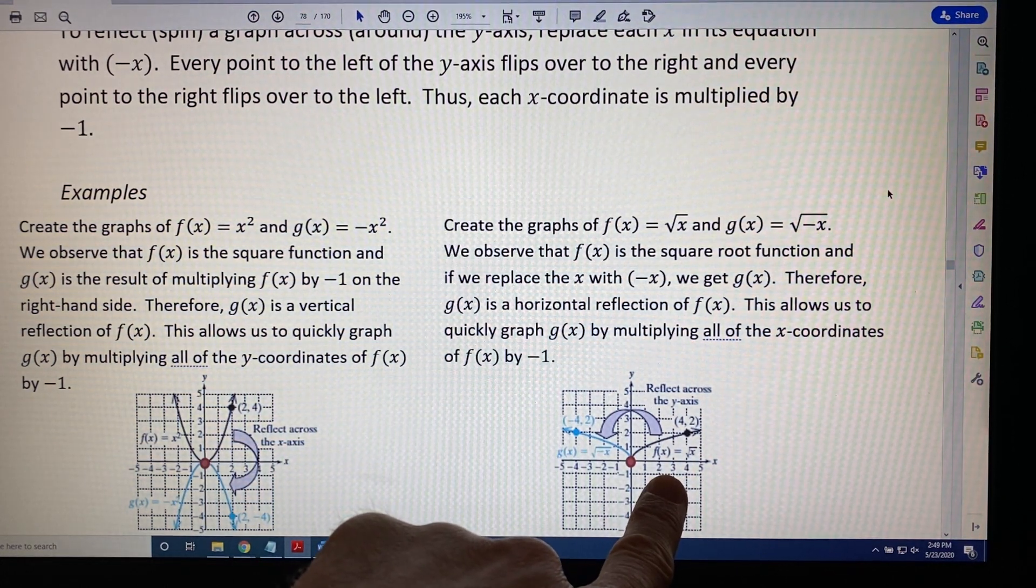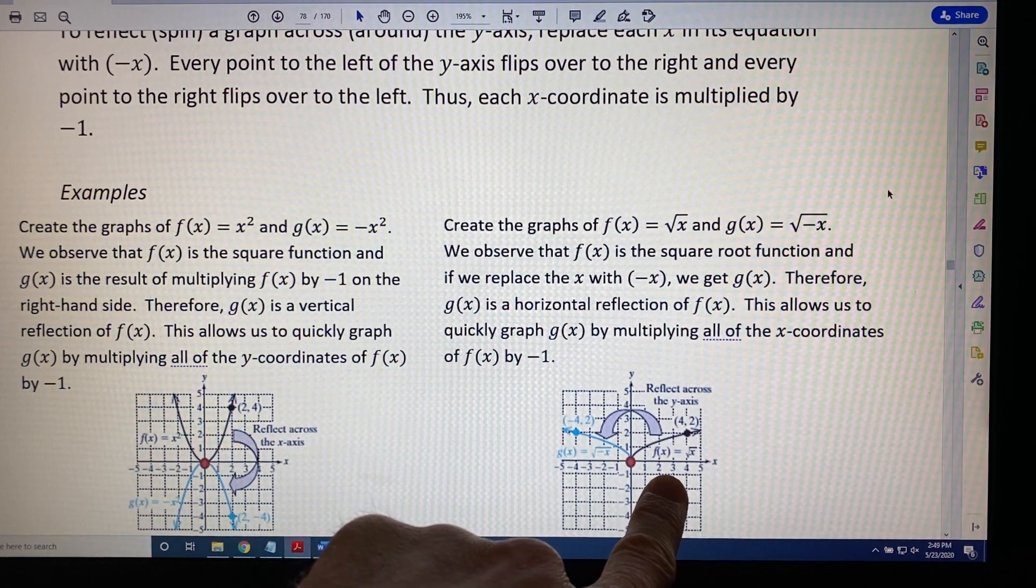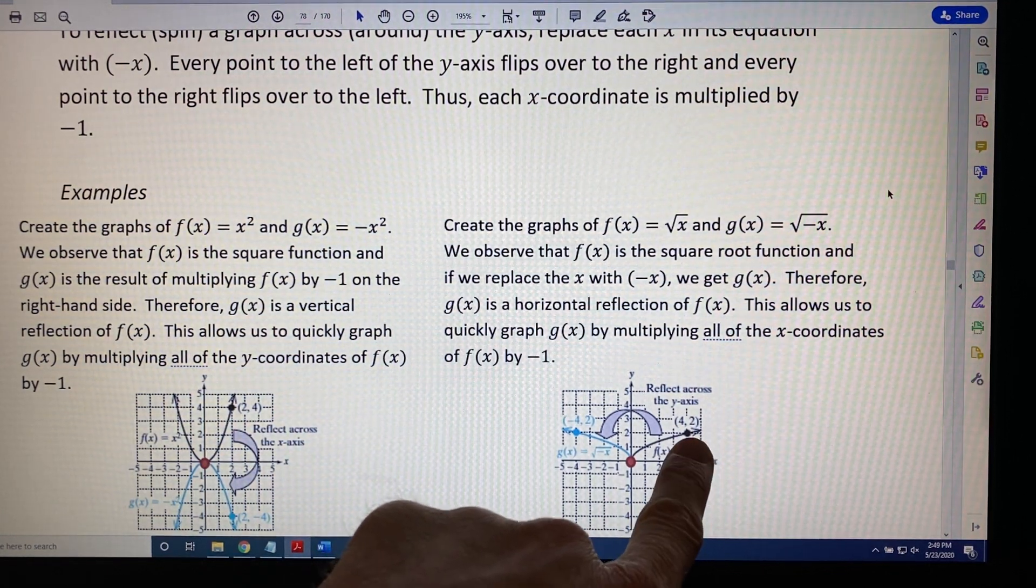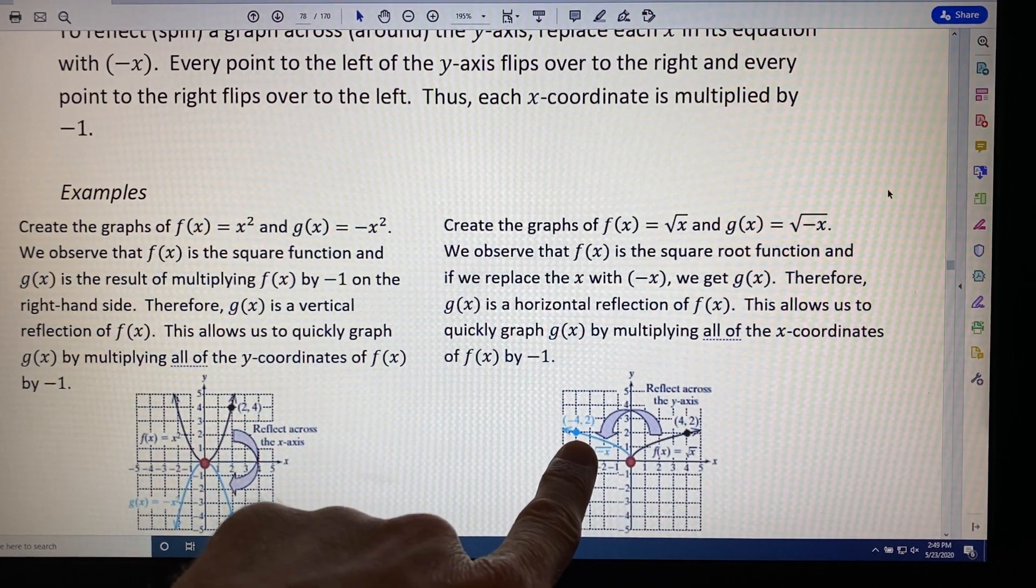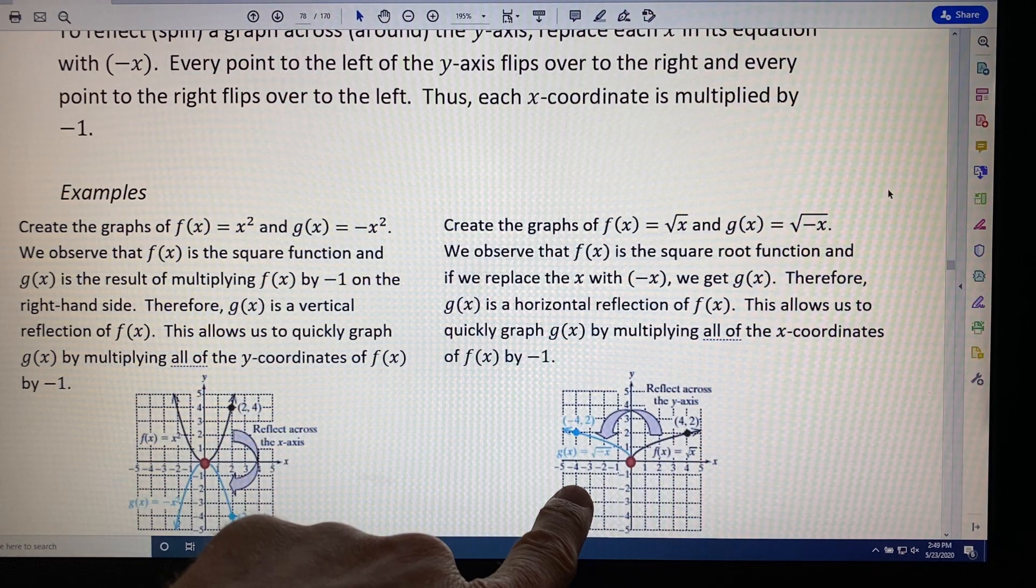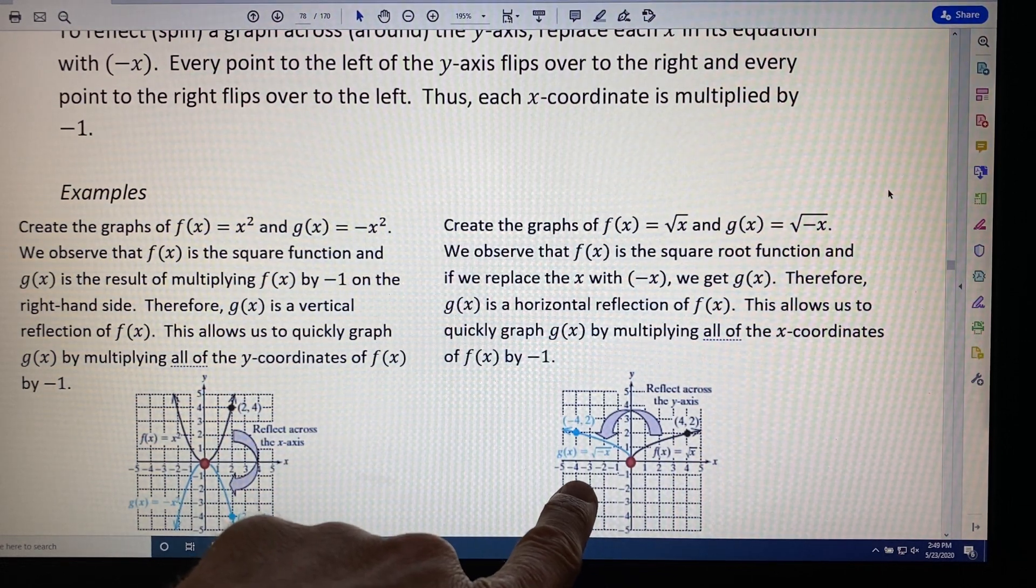But if we multiply all of the x-coordinates by negative 1, then, for example, a point like (4, 2) would become (-4, 2). The x-coordinate changes sign, but the y-coordinate stays the same. Therefore, we get the points on our blue curve, such as (0, 0), (-1, 1), (-4, 2).